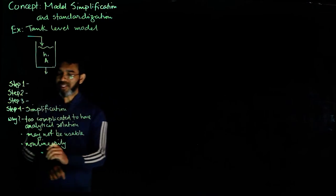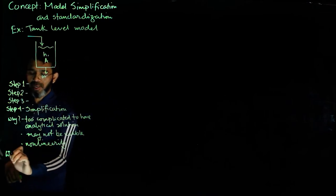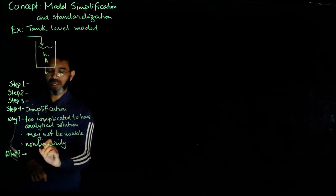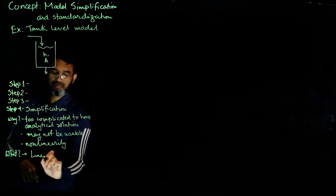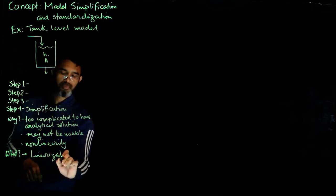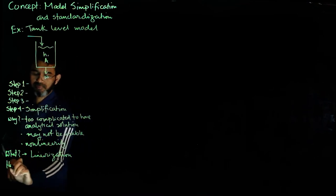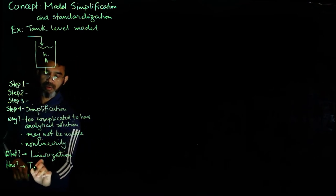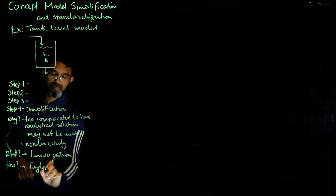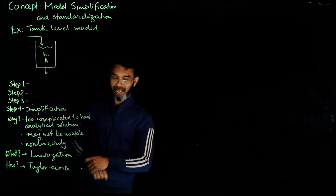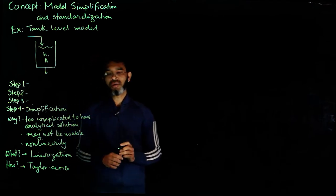Now, what to do? Typically, we will look at one specific aspect of simplification, what is called linearization. And how do we do it? Using Taylor series. More specifically, the truncated Taylor series.